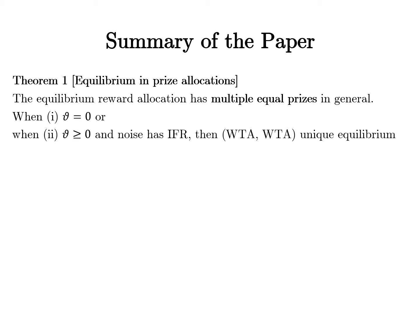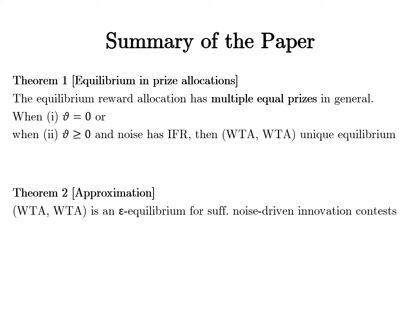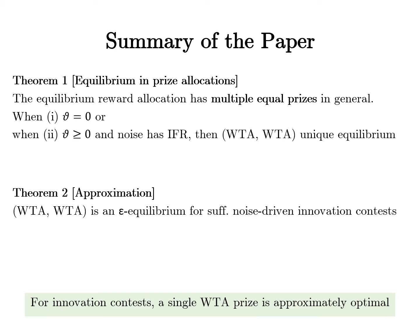This extends the winner-takes-all optimality result known from monopolistic contests to the case of contests with endogenous entry. Our second result shows that both firms choosing winner-takes-all is an epsilon-equilibrium for sufficiently noise-driven innovation contests. Participation requires a single winner-takes-all prize, but effort may require multiple rewards in general. When incentives for participation are sufficiently important relative to effort incentives, winner-takes-all is an approximate best response. The practical insight: if your contest is mainly noise-driven, a single winner-takes-all prize approximates the optimal allocation, and this approximation improves with the noise-dependence of the contest outcome.